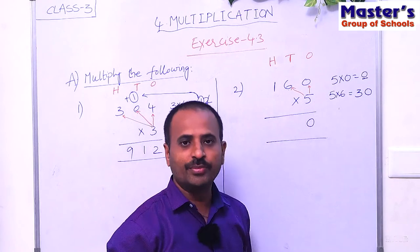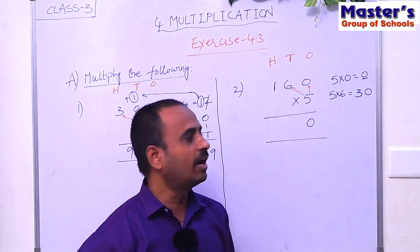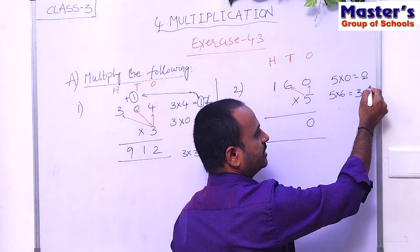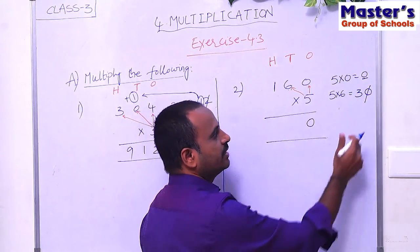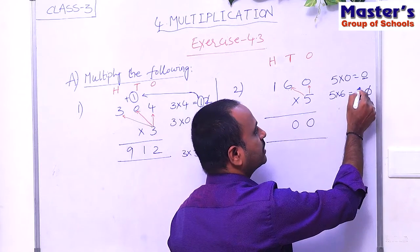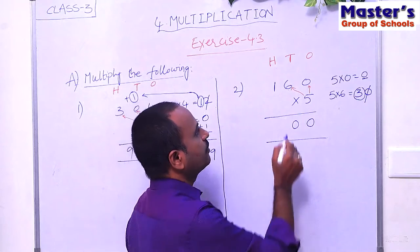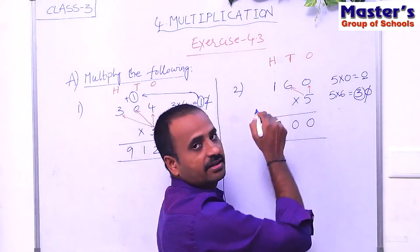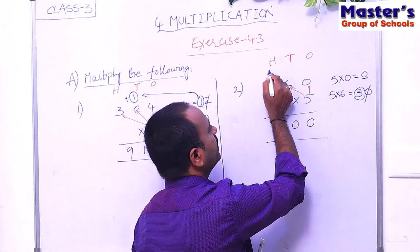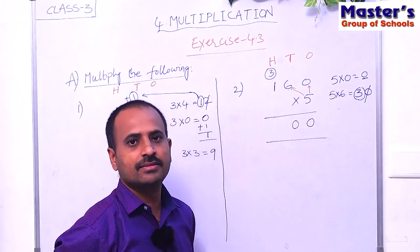If the product is a two-digit number, we have to carry. Write the second digit — that is 0 — under tens place, and carry the first digit, that is 3, to the next place — the hundreds place. Write 3 as the carried number at hundreds place. We have to add the carried number to the product.